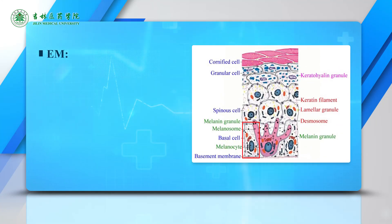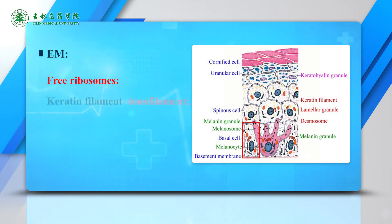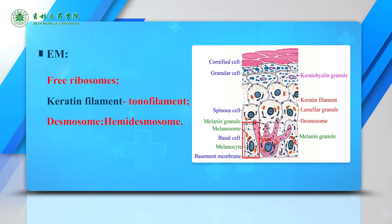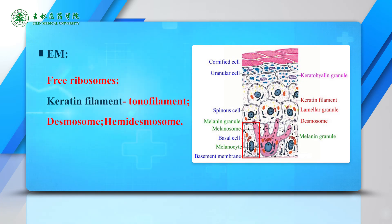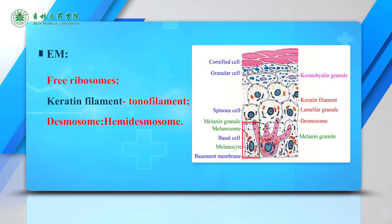By electron microscopy (EM), the cell is rich in free ribosomes, tonofilaments, desmosomes, and hemidesmosomes. Functionally, these cells have intense mitotic activity and proliferation, providing constant renewal of the epidermis.